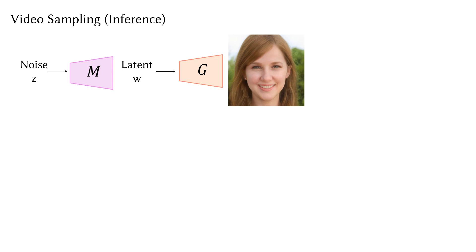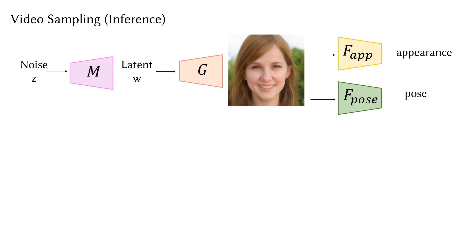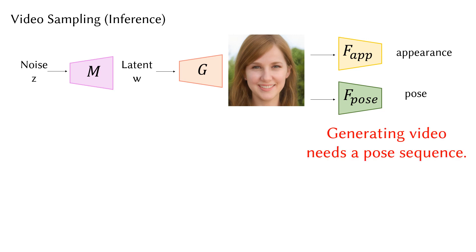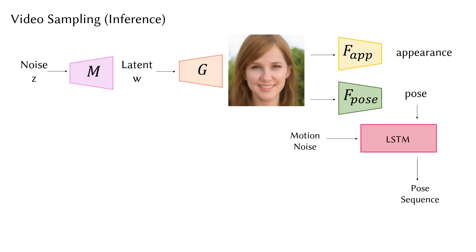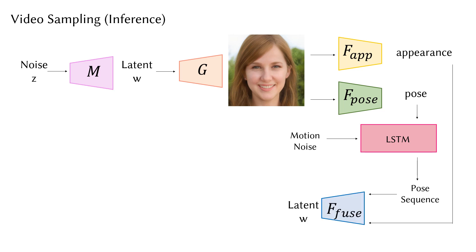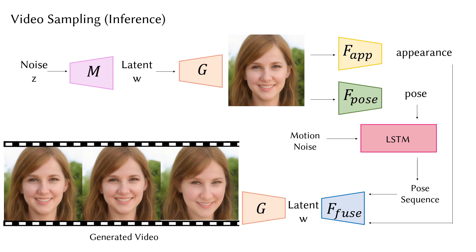During the inference stage, we first sample a single image by generating from scratch. We can get appearance representations and pose representations from the single frame. However, we need a pose sequence to generate videos. Therefore, we learn an LSTM from the extracted pose sequences of real video data in advance. We can get a pose sequence by inputting the first pose of the first frame and motion noise. Recomposing both representations, we get the generated video through the synthesis network.